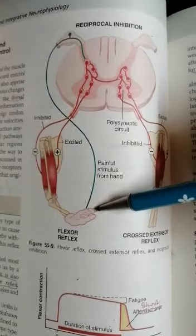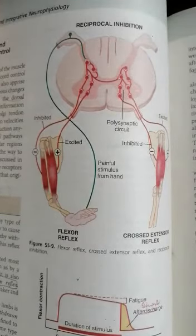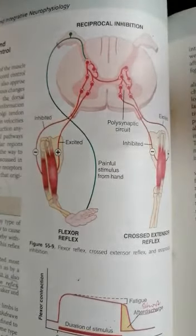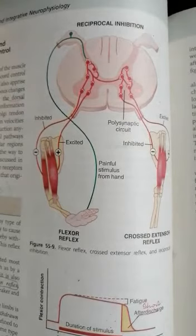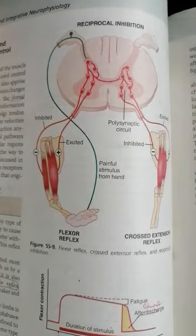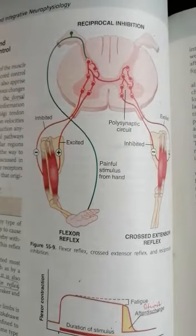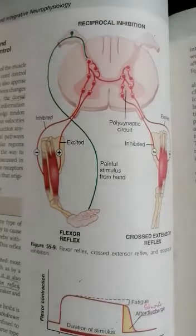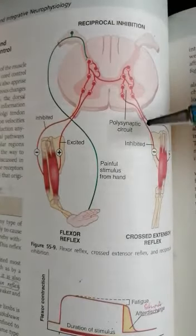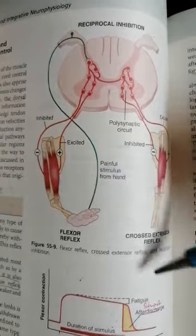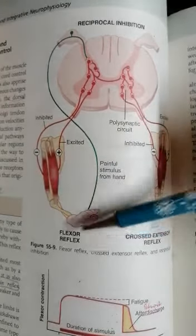This flexor reflex is not particular to the hand or the leg — it is not particular to any limb but can occur in any part of the body. There will be contraction of the muscles present in that area, whether anti-gravity or intercostal muscles. That is why it is called a withdrawal reflex — moving away from the painful stimulus.